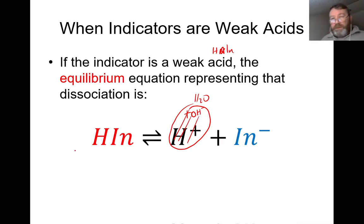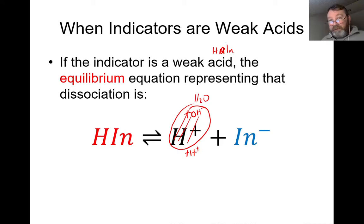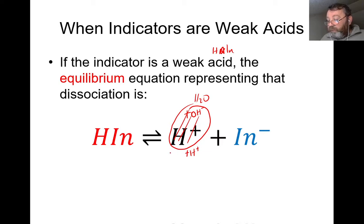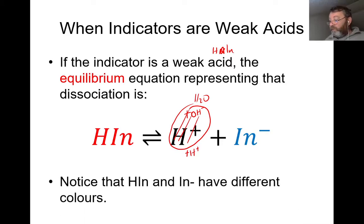If I want to push the equilibrium back to the left-hand side, all I've got to do is add H+ — increase the H+ ion concentration — because anything that increases in concentration causes the equilibrium to be pushed away from it. So if I want to move to the red color, all I have to do is add H+, in other words add an acid, and by adding the acid it will move equilibrium back to the left-hand side and the red color will predominate.